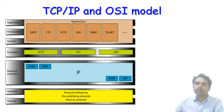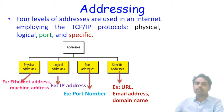Today we shall discuss the addressing of the TCP/IP layer. Since TCP/IP has a five-layer model, four levels of addresses are used in an internet employing the TCP/IP protocol: physical addresses, logical addresses, port addresses, and specific addresses.